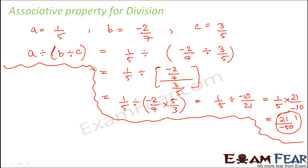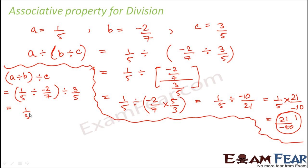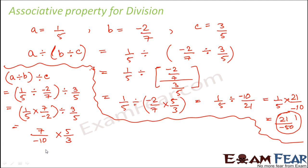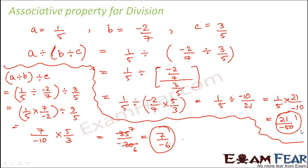Now we calculate (a divided by b) divided by c, which is (1/5 divided by -2/7) divided by 3/5. This gives (1/5 into 7/(-2)) divided by 3/5, which is 7/(-10) into 5/3, equal to 35/(-30), simplified to 7/(-6). Comparing 21/(-50) and 7/(-6), they are not equal, so the associative property does not hold true for division.